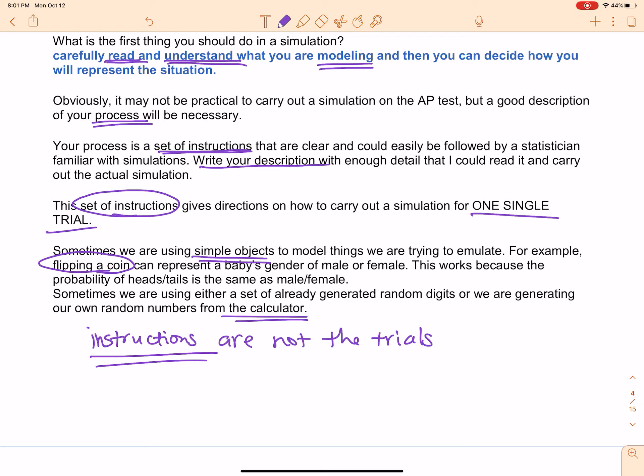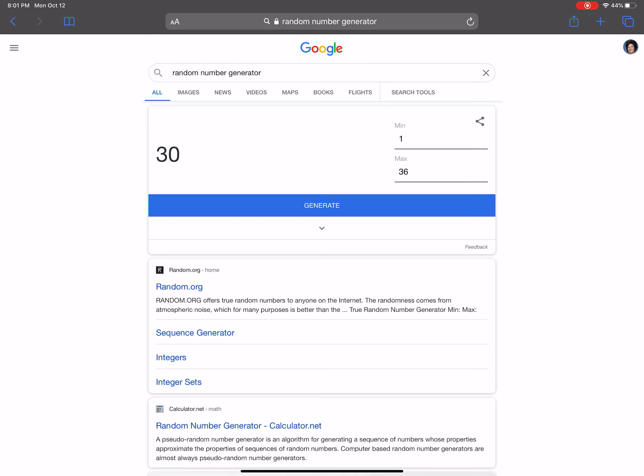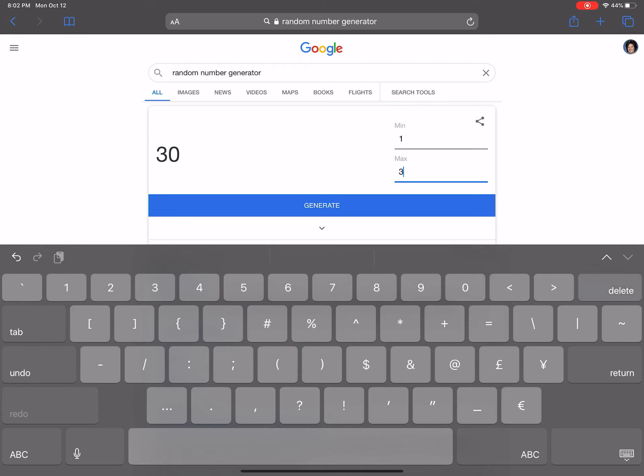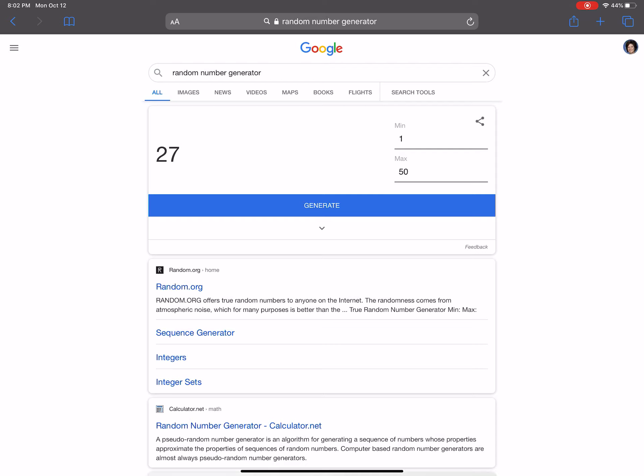I'm just going to open up the internet here. As you can see on this page, all I did was type in random number generator and this is what comes up. So how does this work? Let's say my minimum number is one and I want to choose a random number between one and 50, so I change this to 50. I click generate and it gives me a random number. If I need five random numbers, I'm going to do this five times. That's pretty easy. All you got to do is type in random number generator and you'll get one just like that.